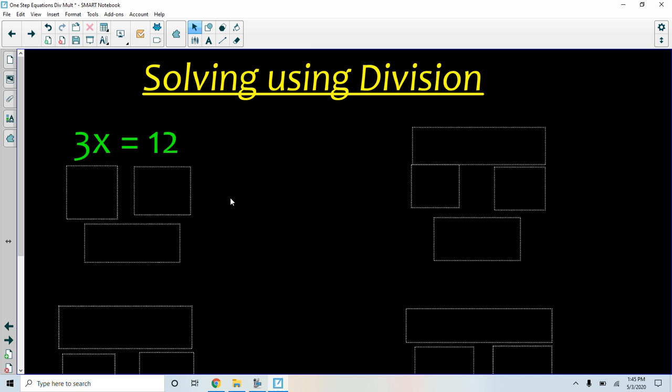Whenever I have a number right next to the letter x, that means I'm multiplying that number with x. So this is 3 times x. We need to do the opposite of 3 times, and so the opposite of multiplying by 3 is dividing by 3. So we can divide both sides by 3.